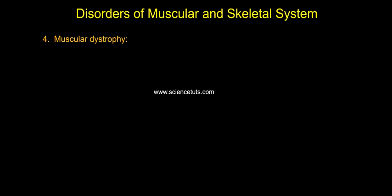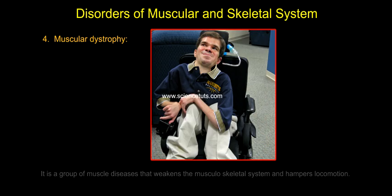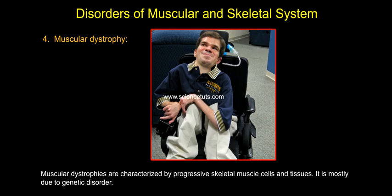Muscular dystrophy is a group of muscle diseases that weakens the musculoskeletal system and hampers locomotion. Muscular dystrophies are characterized by progressive deterioration of skeletal muscle cells and tissues. It is mostly due to genetic disorder.